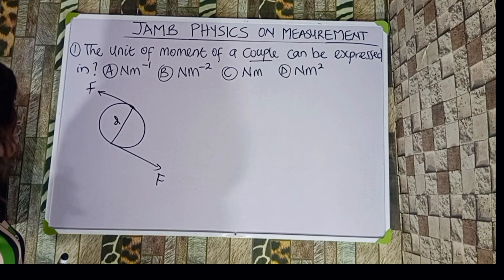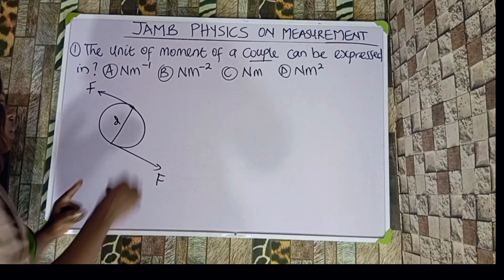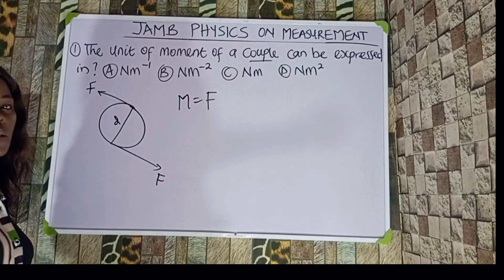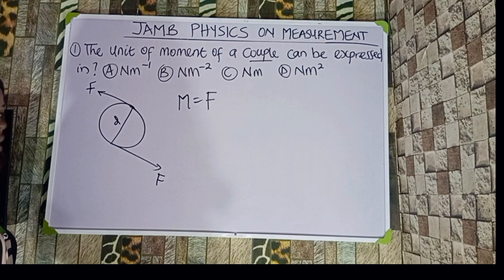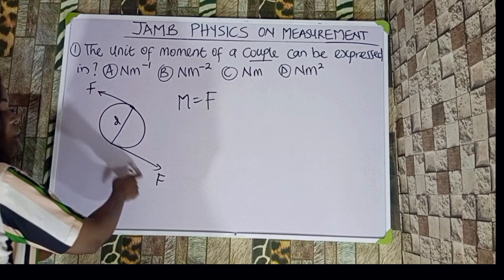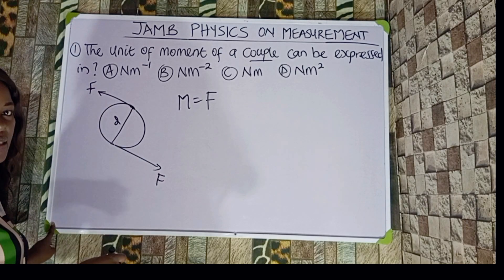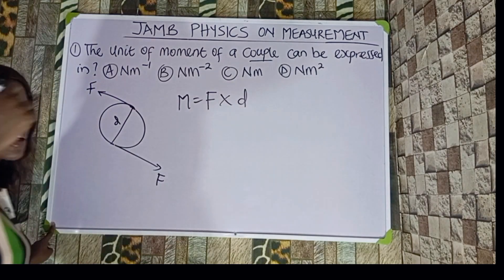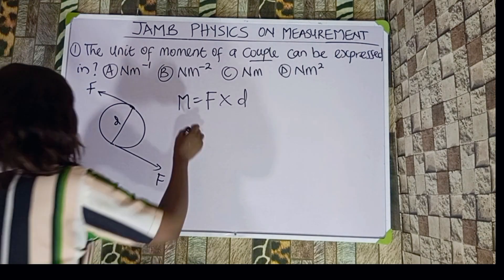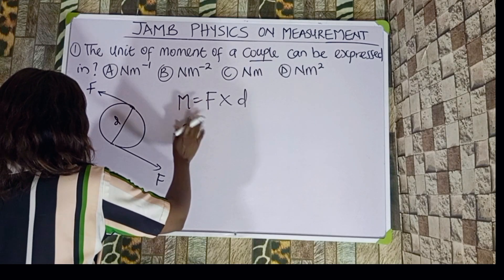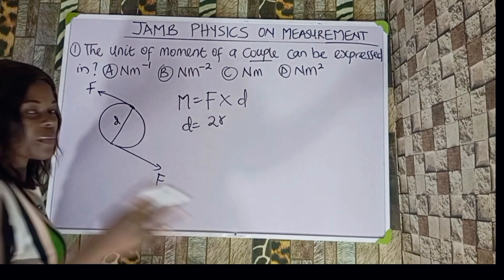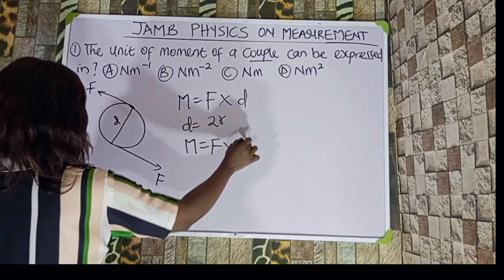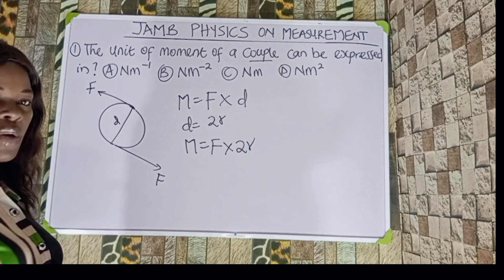The moment of a couple is the product of one of the forces multiplied by the perpendicular distance. Since we have two forces, we take one of the forces and the perpendicular distance. This is multiplied by the diameter, which is measured in meters. We should also remember that diameter equals two times radius, so in some cases the moment of a couple equals force multiplied by two times radius.